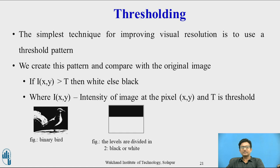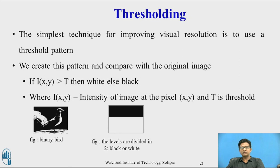The simplest technique for improving visual resolution is to use a threshold pattern. We create the pattern and compare it with the original image. If a pixel in the original image exceeds the corresponding pixel in the threshold pattern, it is replaced by 1 (white), else it is replaced by 0 (black). That is: if I(x, y) > t then white, else black — where I(x, y) is the intensity at pixel (x, y) and t is the threshold value.